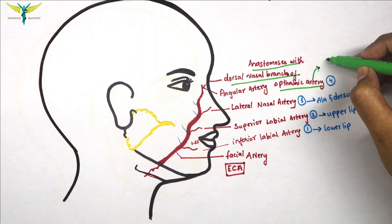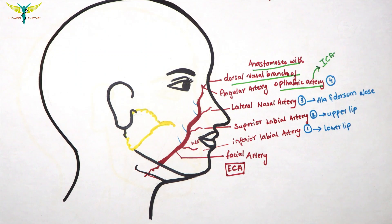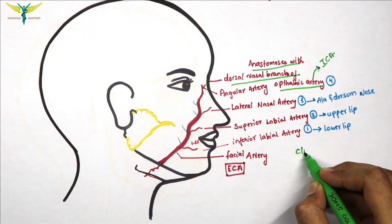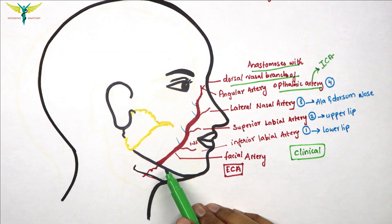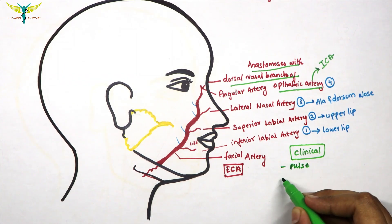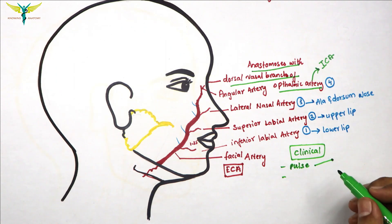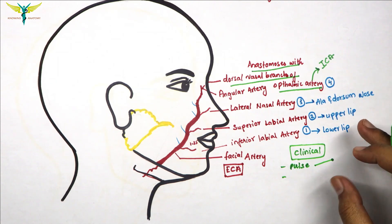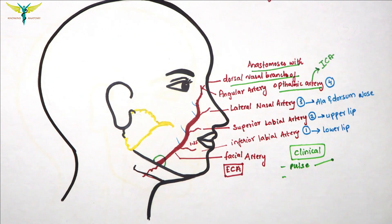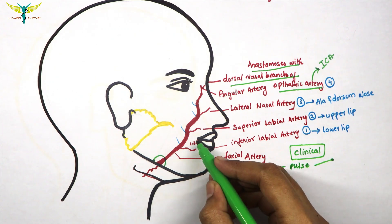The ophthalmic artery is in turn a branch of the internal carotid artery. Regarding clinical correlation, the facial artery can be palpated to feel the pulse. As it is a tortuous artery, these pulsations can be felt at the base of the mandible near the anterior inferior angle, and also about 1.25 centimeters lateral to the angle of the mouth.